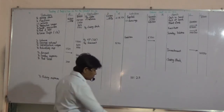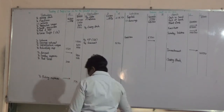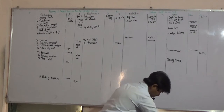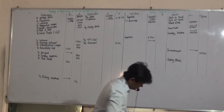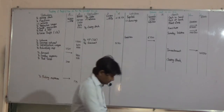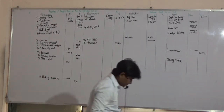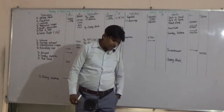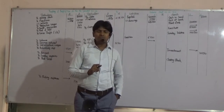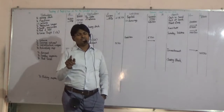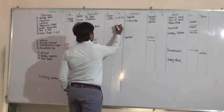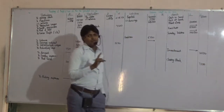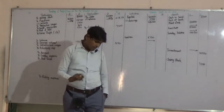Let's start the adjustments. Closing stock is 7,100 and 7,500 — whichever is less is 7,100. The second effect is the asset side.